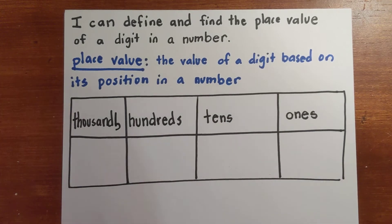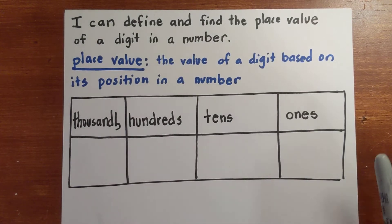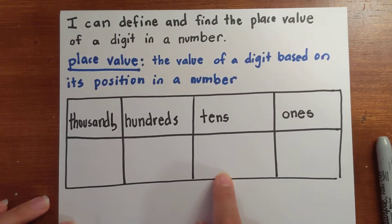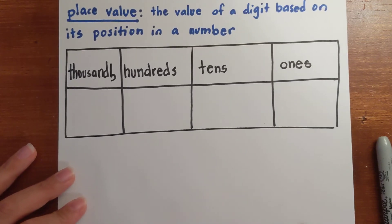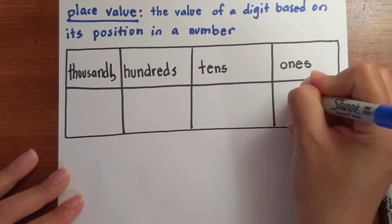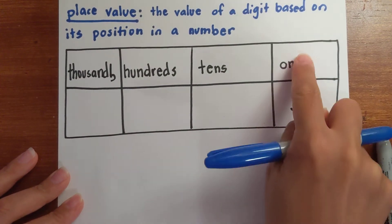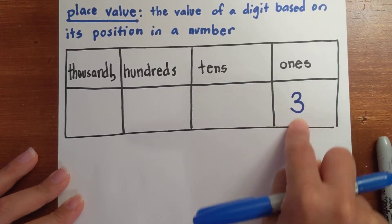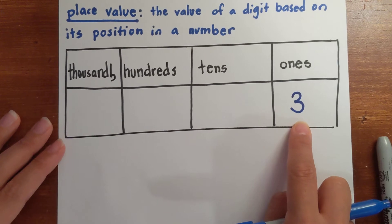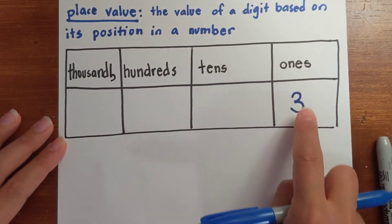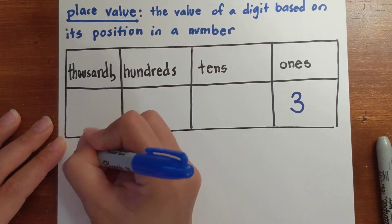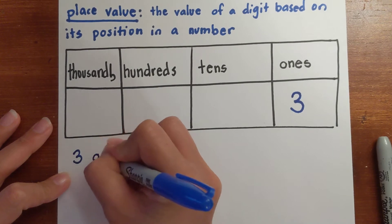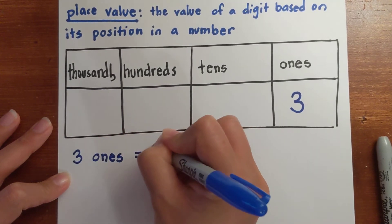So depending on where I place the digit or a number, its value is going to change. Let's look at three. If I place the three right underneath the ones, in this place, this three goes right here in the ones place. So the value of this three is three ones, which is also equal to just three.